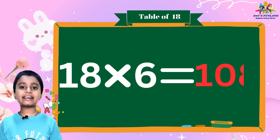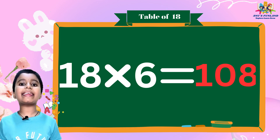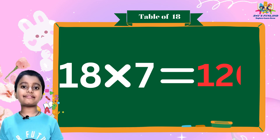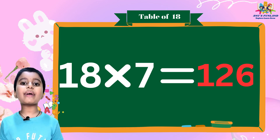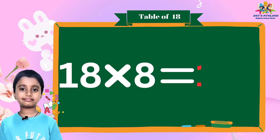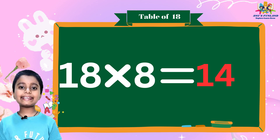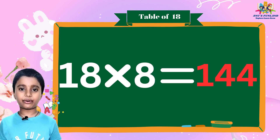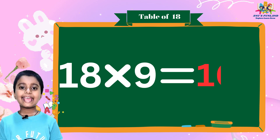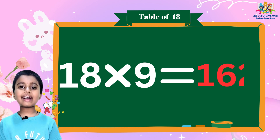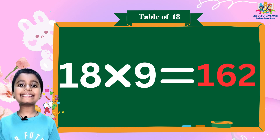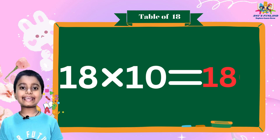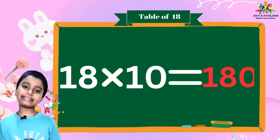18×6 is 108, 18×7 is 126, 18×8 is 144, 18×9 is 162, 18×10 is 180.